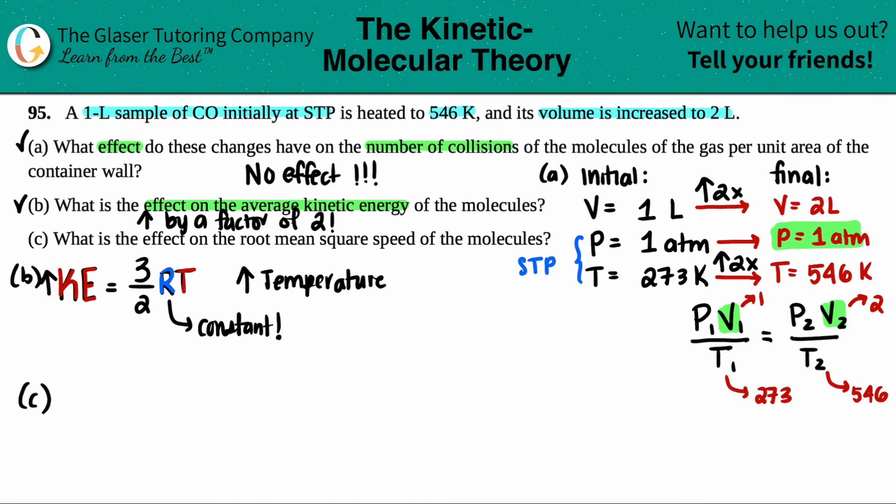Now, finally, we have letter C. It says, what is the effect on the root mean square speed of the molecules? Well, this now comes from a little bit different formula here. But instead of doing three over two times R times T, kinetic energy also is linked with the root mean square speed by one half m u squared. M stands for the mass of whatever the molecule is. And since it's just carbon monoxide, and the mass hasn't changed, we technically don't care about the m. So we can get rid of that.